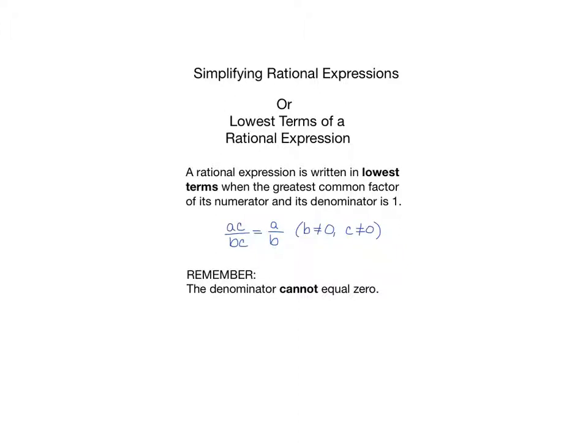When we simplify rational expressions, you might also see the directions stated as 'reduce to lowest terms.' A rational expression is written in lowest terms when the greatest common factor of its numerator and denominator is 1.